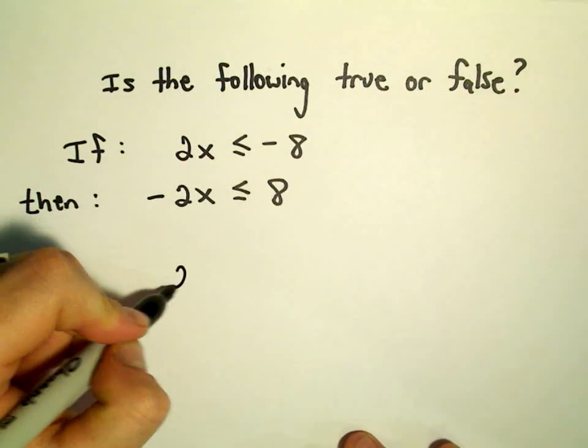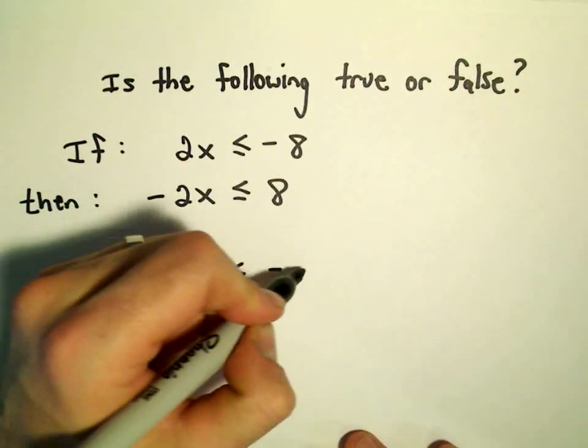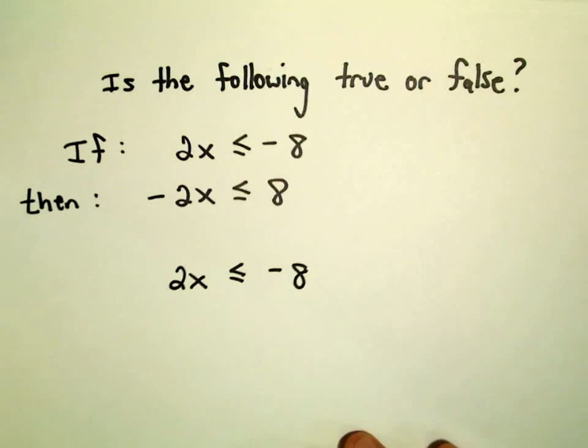Let's think about what happens. We know that 2x is less than or equal to -8; we can assume that's true.